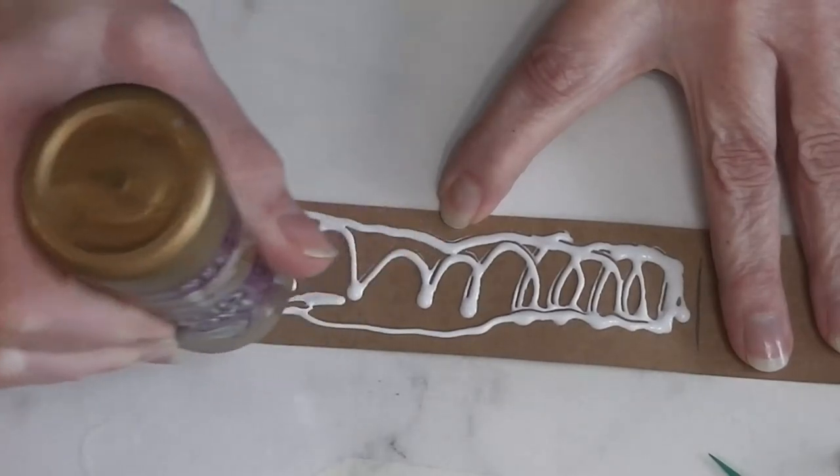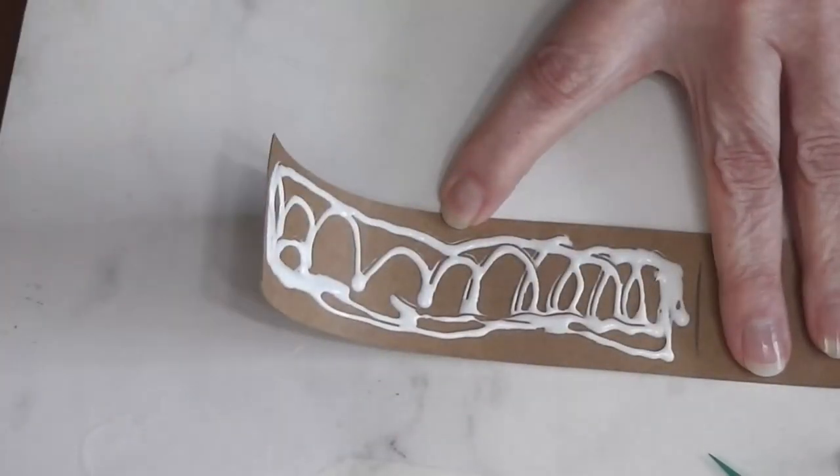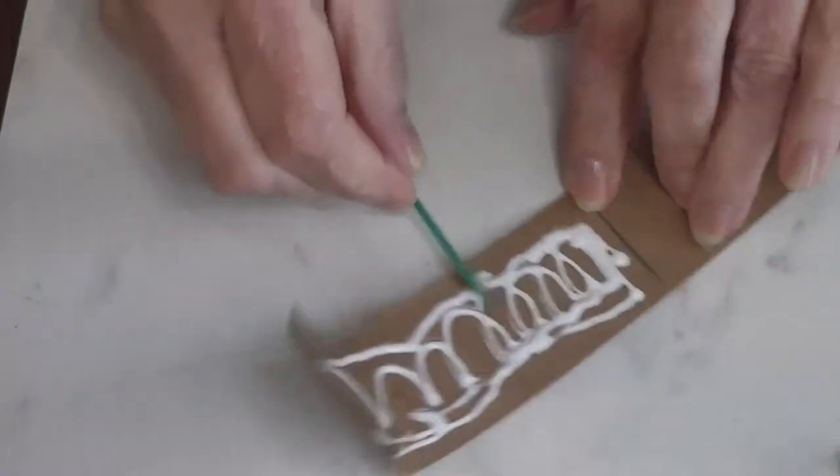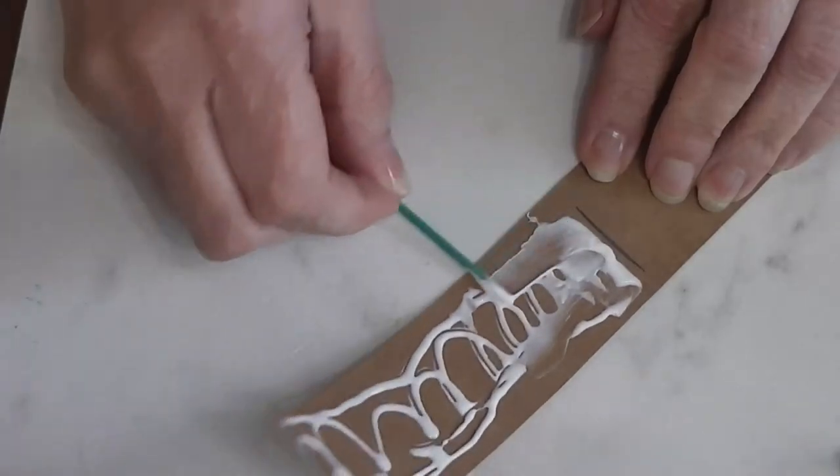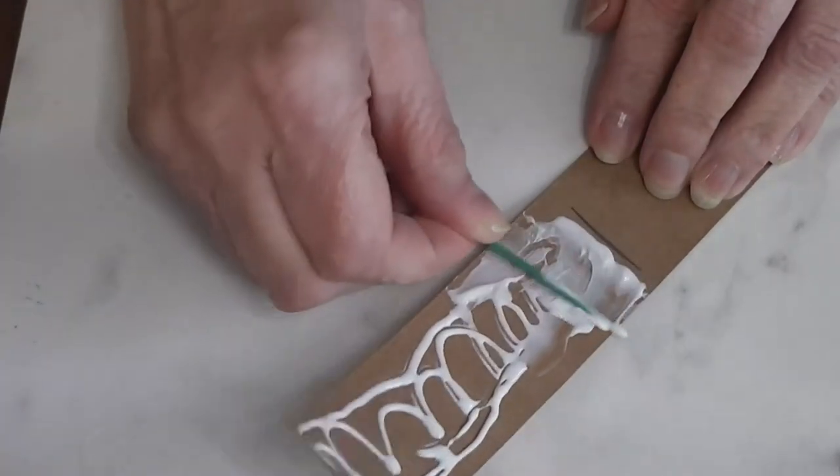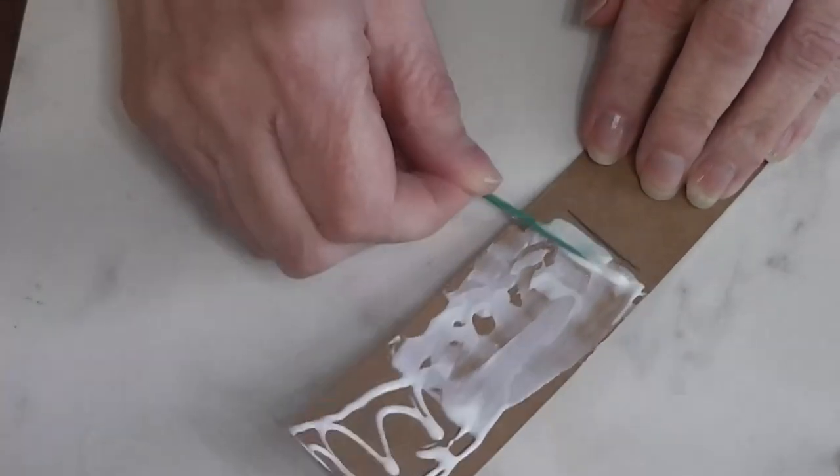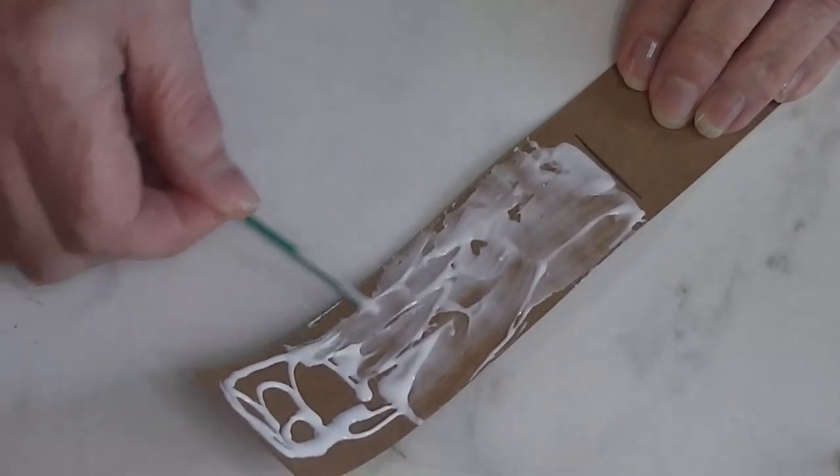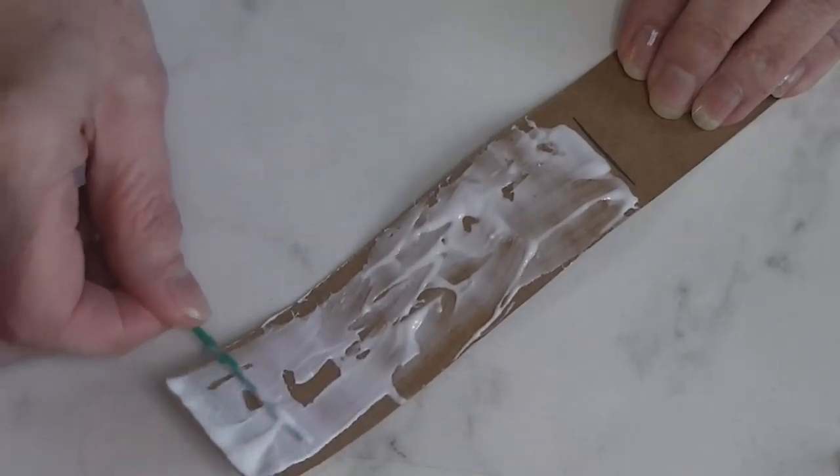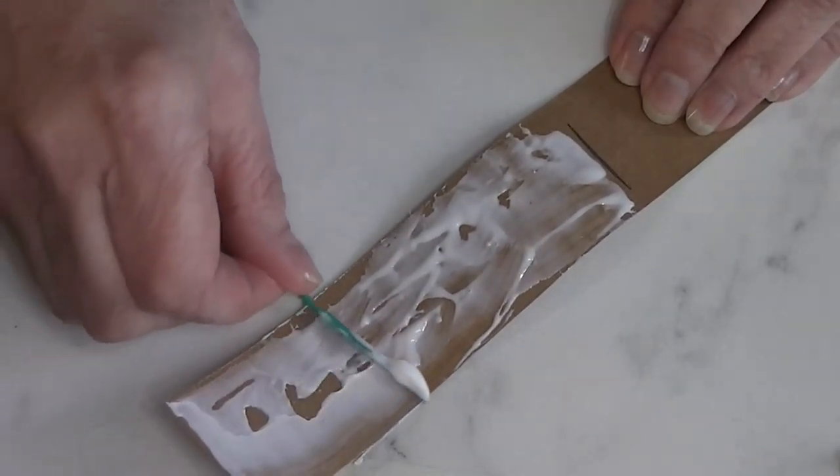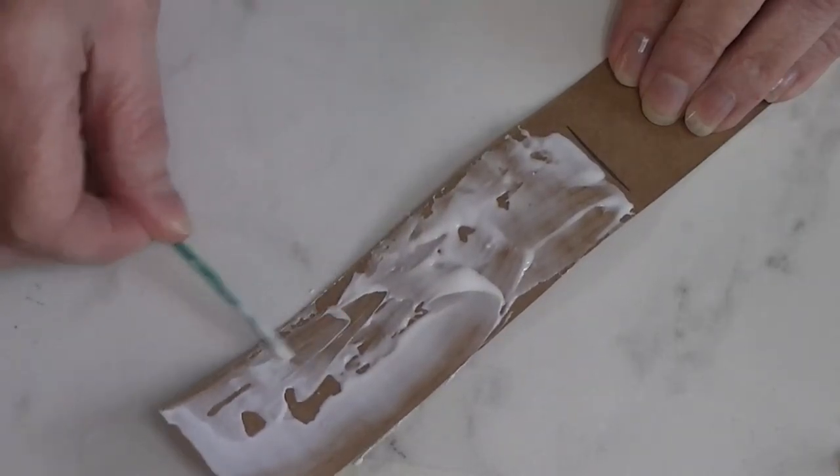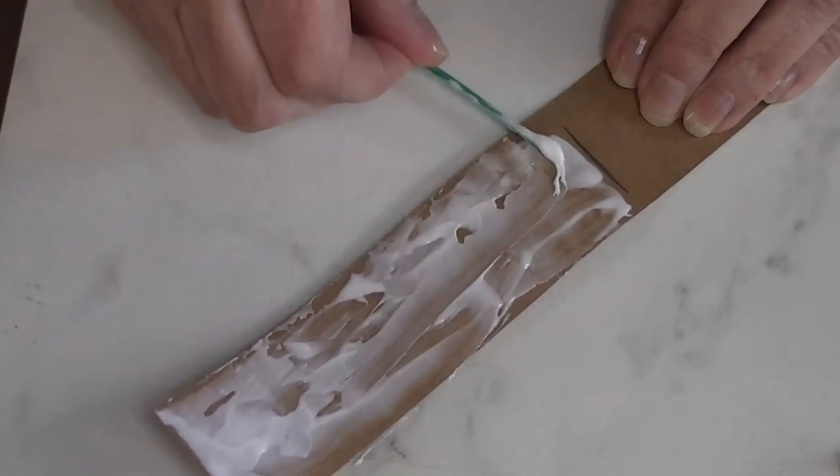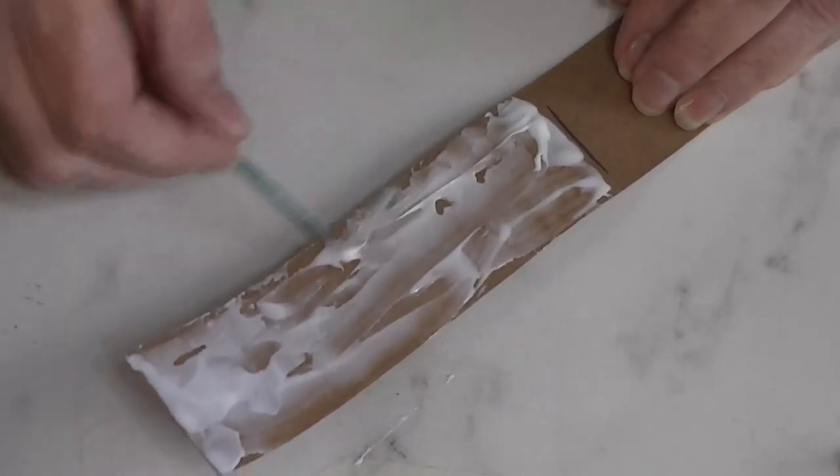So I'm using a nice thick glue, tacky glue. I'm going to spread it with a toothpick. You want this covered pretty thoroughly, but you don't want excess glue. And this will need to dry completely before we go to our next step. I recommend doing this the night before, so it has 8, 10, 12, even 24 hours to dry.